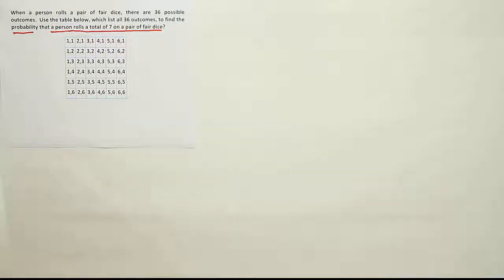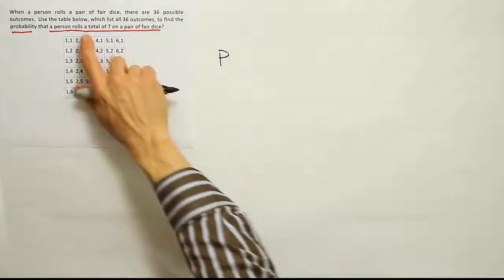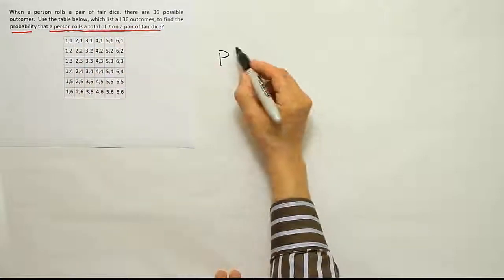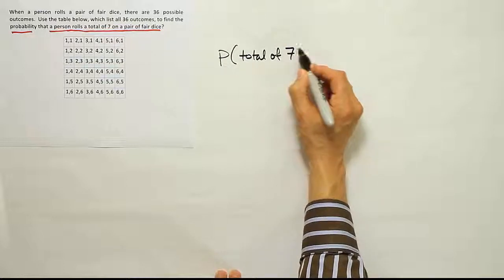So if we're working basic probability, the first thing we have to do is write out a probability statement. So we're looking for the probability of rolling a total of 7.